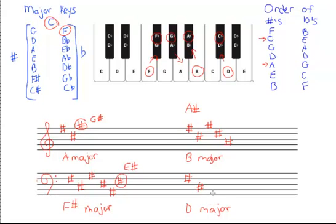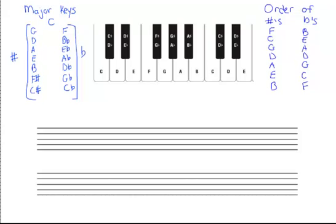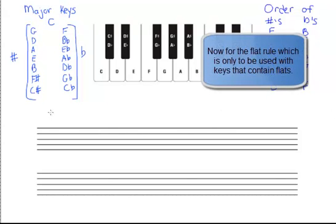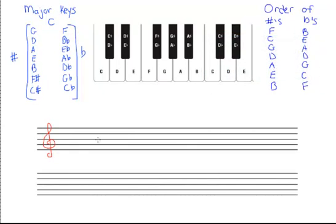That is the trick for figuring out sharps in both directions — whether given the key and figuring out the key signature, or given the key signature and figuring out the key. That's one method for sharps. Now let's look at this method for flats.